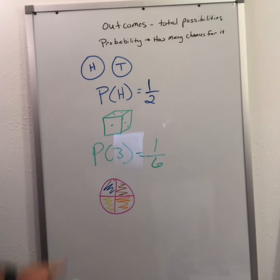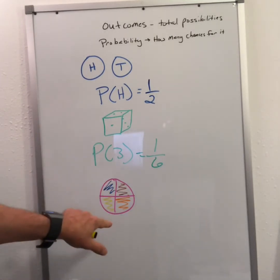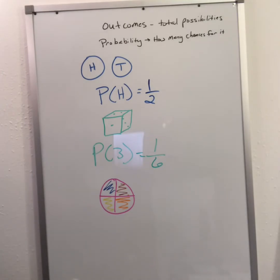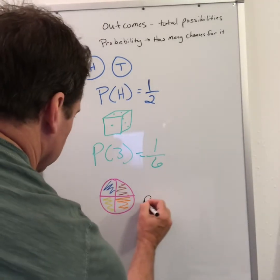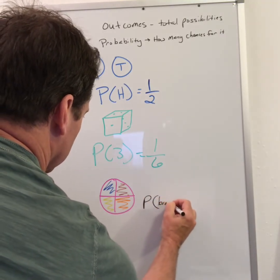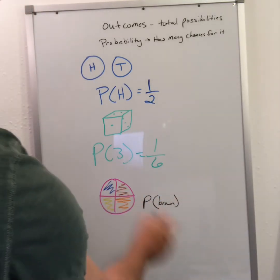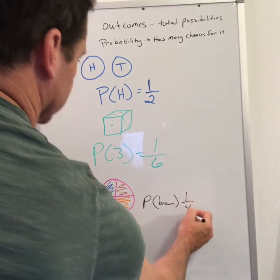If you have a spinner and if they're all equal-sized pieces, the total number of outcomes is four. So if I asked for the probability of brown, I'd have one chance out of the four possibilities.